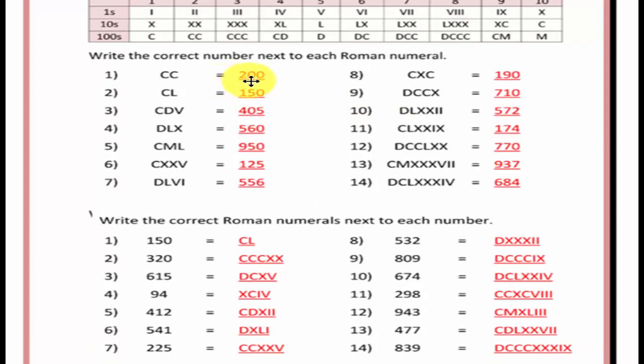Now, you should have c's, we should have 200, 150, 405, 560, 950, 125, 556 for number 7.